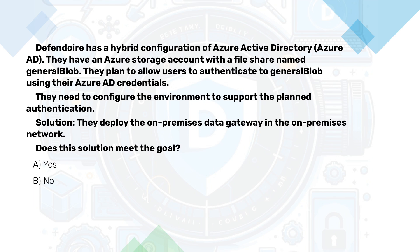We have a hybrid configuration of Azure Active Directory. We have an Azure storage account with a file share named General Blob. We plan to allow users to authenticate to General Blob using our Azure Active Directory credentials. We need to configure the environment to support the planned authentication. We deploy the on-premises data gateway in the on-premises network. Does this solution meet the goal? Now pause the video here, have a bit of think and then continue when you are ready. It is incorrect.